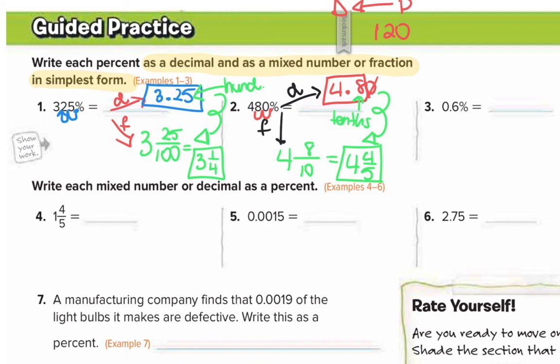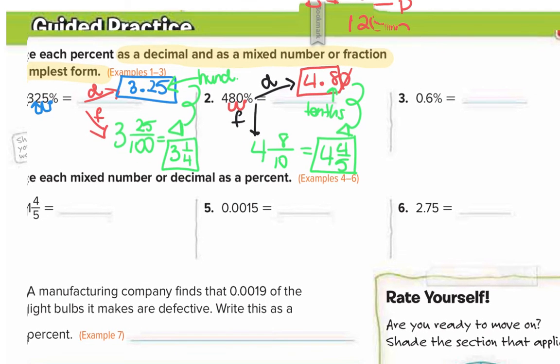Number 3. We have 0.6 percent. This is a percent - there's a decimal in it but it's still a percent. Because it's a percent, we still have to move the decimal two to the left to get it to be a decimal. We move it two to the left, then fill in the empty space with a zero. So you get 0.006.